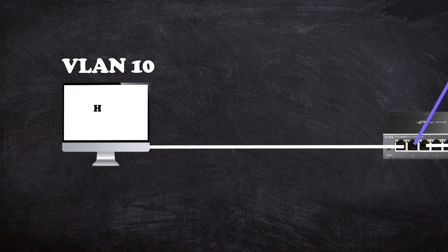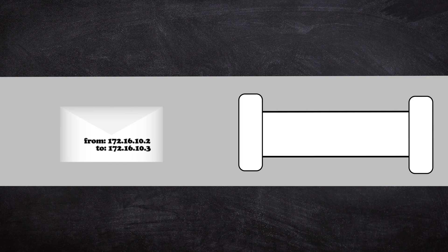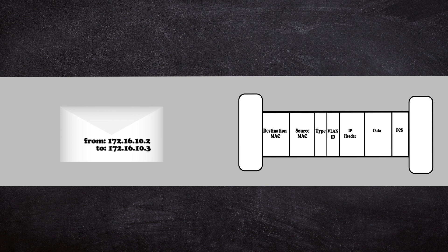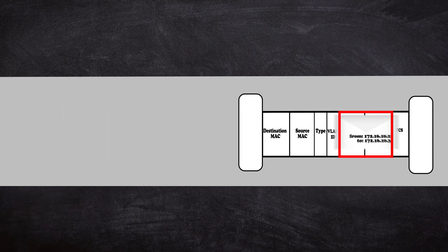You might ask: if there is no router, how does this all work? How does the data know where to go with no IP addresses? When a device wants to transmit data across the network, the data must be wrapped into two distinct containers. The first is the IP packet — think of it like a little envelope containing the message, the source, and the destination IP addresses. That packet goes inside another container called the Ethernet Frame, like a tube canister divided into several slots, and the IP packet goes into its designated slot inside the frame.